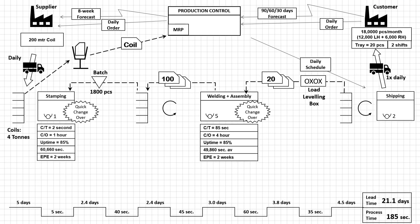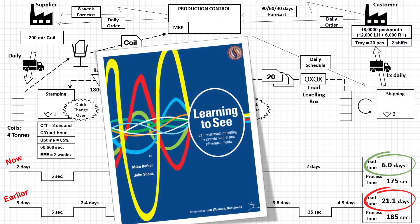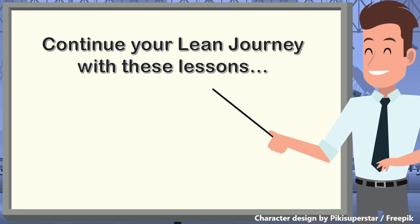Now let us look at the timeline we have achieved. Comparing the lead times of our current state and the future state, we have reduced 21 days to just 6 days — meaning customers will get delivery in 6 days instead of 21 days, and we have not added any new machine or equipment. That is the power of VSM. I hope I was able to explain the basic concept. If you need more details, you can go through the referenced book or ask me in the comments below. Lean is a continuous journey, and I will see you again with the next topic. Have a nice day.